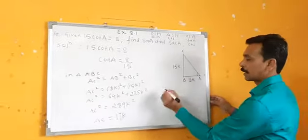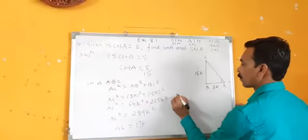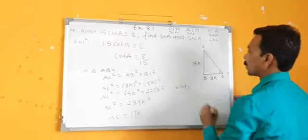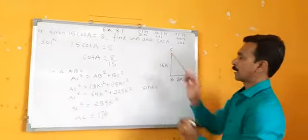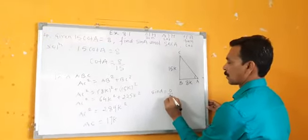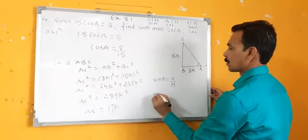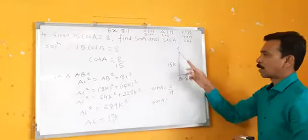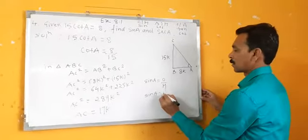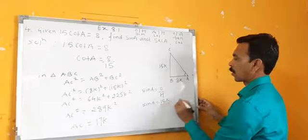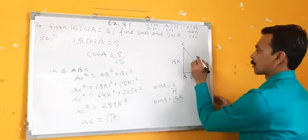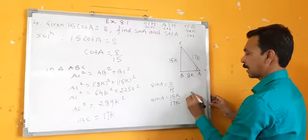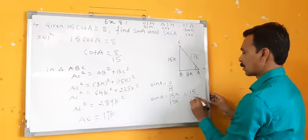Now I will find sine. Sine means opposite upon hypotenuse. So sin A will be the opposite side 15K upon hypotenuse 17K. K and K get cancelled. Sin A equals 15 upon 17.